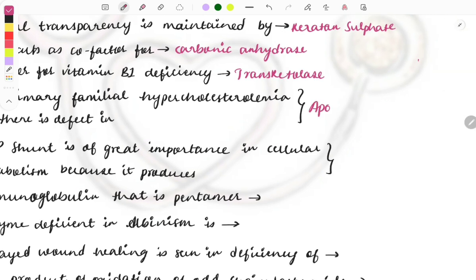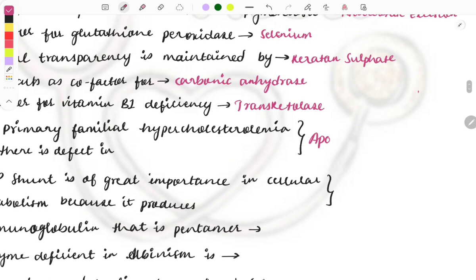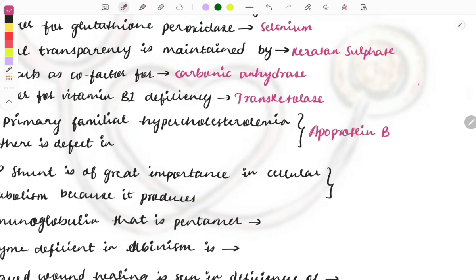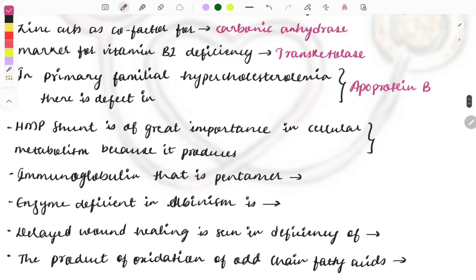HMP shunt is of great importance in the cellular metabolism because it produces which substance? It produces NADPH.